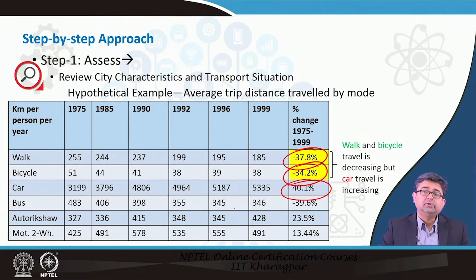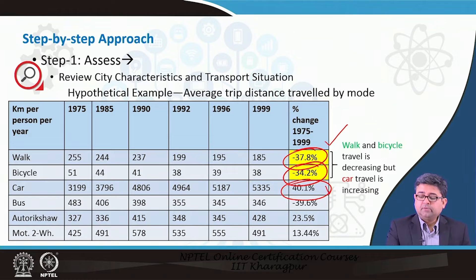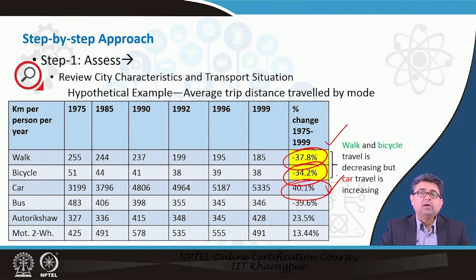This data tells you what kind of infrastructure is also in place. Maybe the provision of walking infrastructure in this particular city is not good, which is why the percentage of people walking is decreasing, whereas the provision of infrastructure for car traffic is good, which is why more people are using their cars. It gives you a feel for the type of infrastructure available in your city.